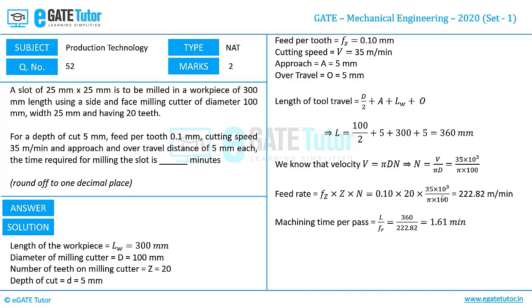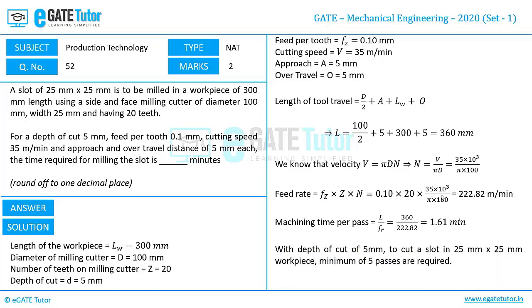It is given that the depth of cut is 5 mm and the slot is 25 mm × 25 mm. We require at least 5 passes to make the desired slot. Since the machining time per pass is 1.61 minutes, for a minimum of 5 passes the total machining time required for the desired milling slot of 25 mm × 25 mm is 5 × 1.61 = 8.05 minutes.